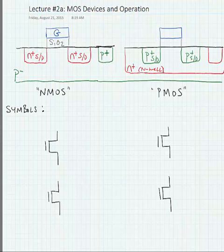And we need to make a contact to the N-well, so we'll put an N-plus region. And nominally, we're going to tie this to the highest voltage in the process, typically VDD. The gate is still separated from the channel by an oxide, and that oxide is still silicon dioxide.